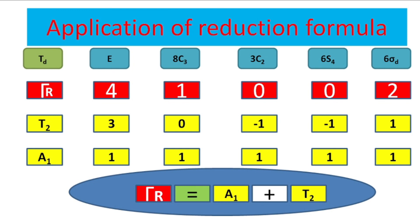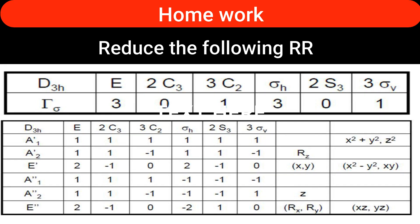My objective was to explain the application of the reduction formula, and I hope the formula and its application are now clear. For homework, the question is related to the d3h point group — the reducible representation Γσ is 3, 0, 1, 3, 0, 1. Find which irreducible representations are involved and how many times each occurs. Write the Mulliken's notations for those irreducible representations in the comment box, applying the reduction formula. I am waiting for your answer — thank you.